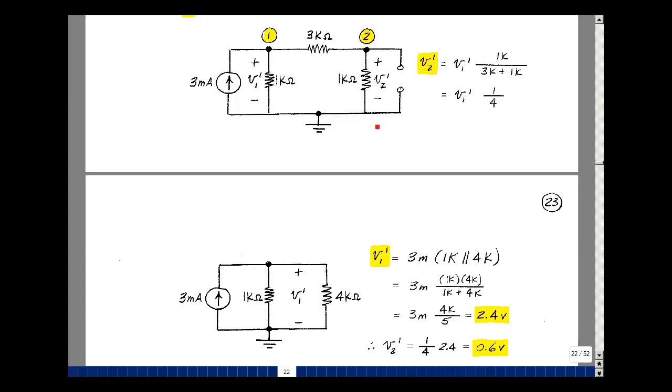Solve for V1 prime. Because these two resistors are in series, I can replace them by one 4k resistor. Now, when I do that, the voltage V2 prime disappears, but this is an equivalent circuit. I'm going to use that to find V1 prime. Two resistors in parallel. This current is going to flow into these two elements.